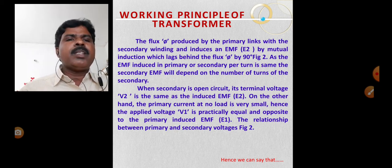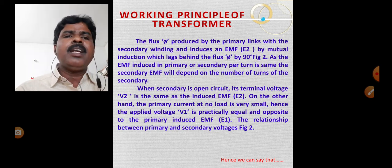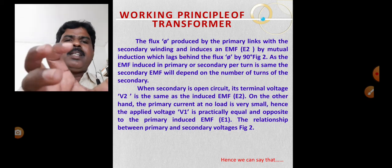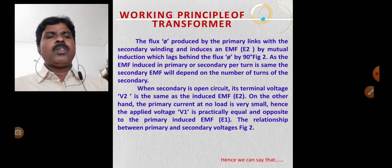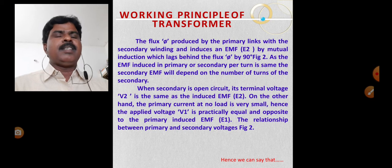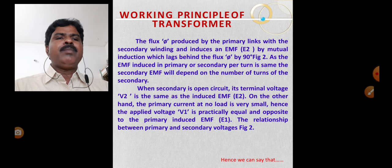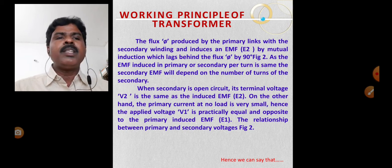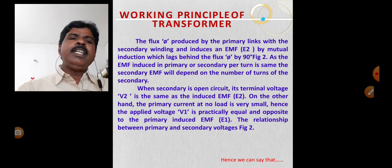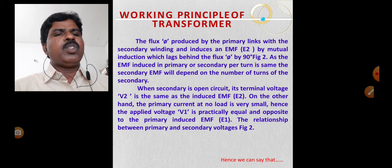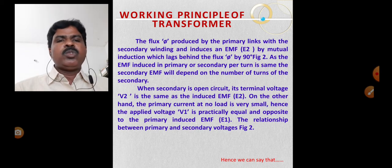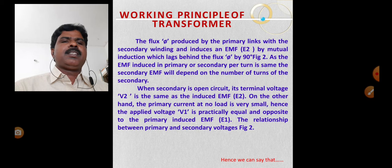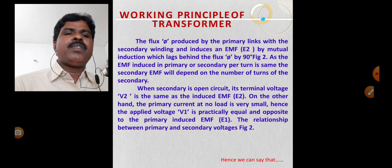Because that flux is linked to the secondary winding, an EMF E2 is induced. The flux produced by the primary links with the secondary winding and induces an EMF E2. This is based on the mutual induction principle — E2 lags behind the flux by 90 degrees.